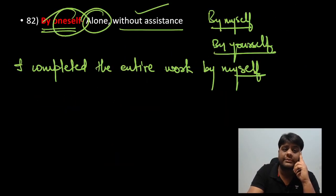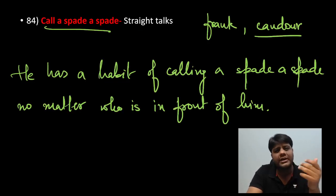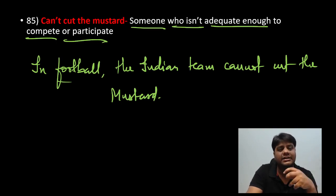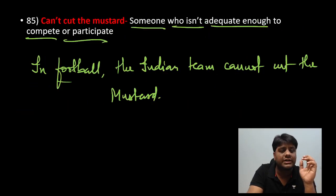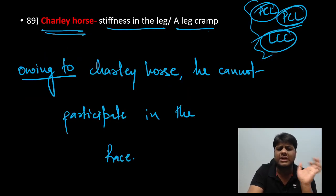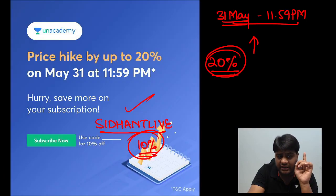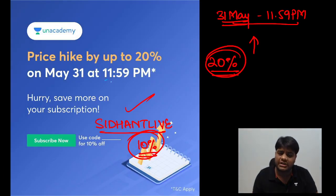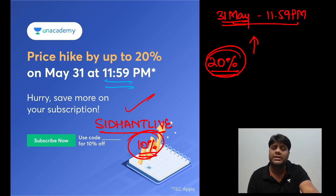Let's do a quick revision: by leaps and bounds — rapidly; by oneself — alone; by the way — incidentally; call a spade a spade — speak frankly; cannot cut the mustard — not capable enough; cast iron stomach — can eat anything; cock and bull story — untrue story; cats and dogs — heavy rain; Charlie horse — leg stiffness; chew someone out — verbally scold someone. Rate increases at midnight on the 31st. Like the session, subscribe to the channel. Next idiom session tonight at 10 PM sharp. Bye bye!